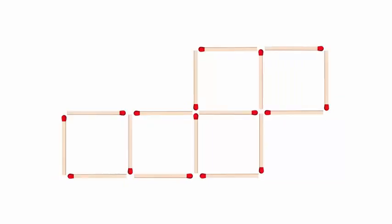So we have 5 squares made from 16 matchsticks. To make 4 squares using the same 16 matchsticks, each square must share none of its sides.